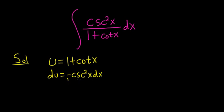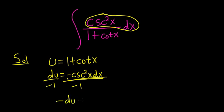And now the goal is to make this piece down here look like what's in the integral. So the integral does not have a negative, so we'll divide both sides by negative 1. That gives us negative du equals cosecant squared x dx.